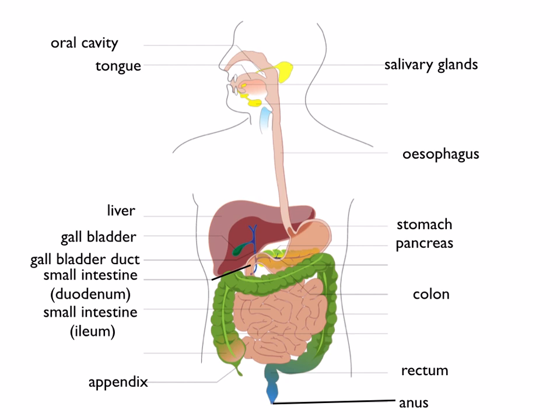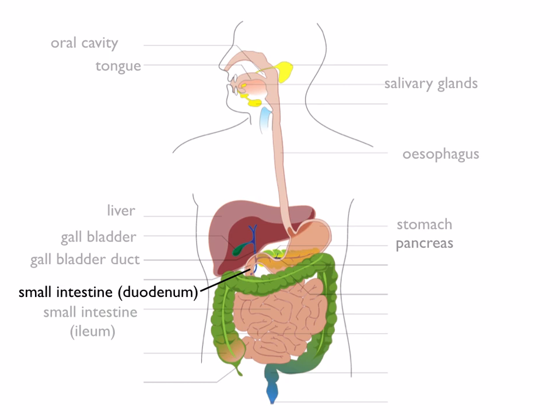You should remember this from the previous topic: we looked at how food moves down the esophagus by peristalsis, and how the stomach has got acid and enzymes to break down proteins. Now we're going to have a look at what happens in the small intestine. The first part of your small intestine is called the duodenum, and this is where food molecules are digested. The second part is called the ileum — this is where food molecules are absorbed. An easy way to remember: D for duodenum comes before I for ileum.